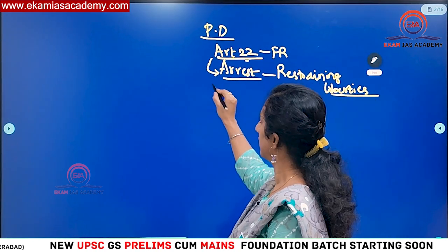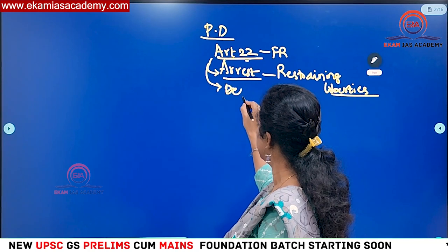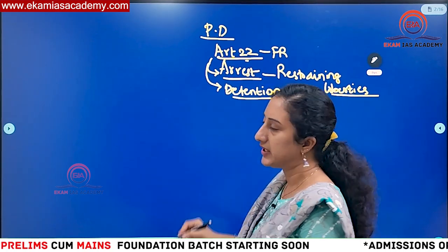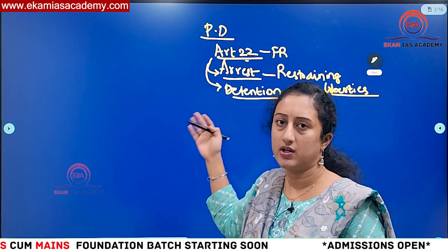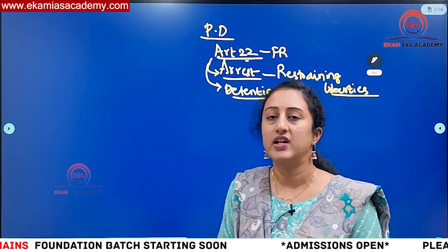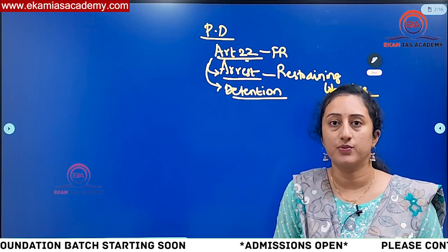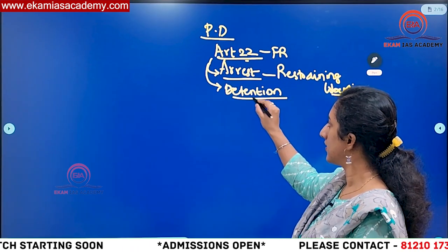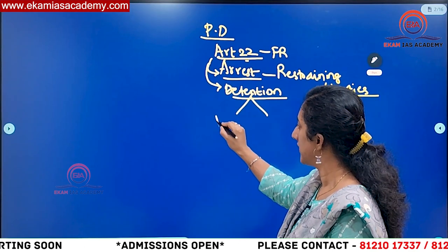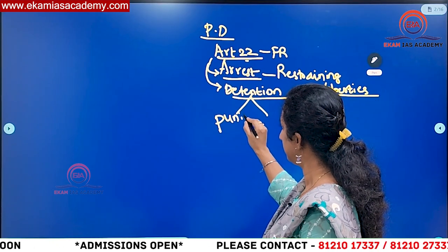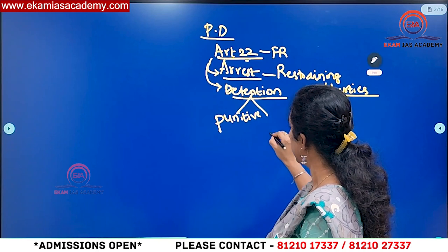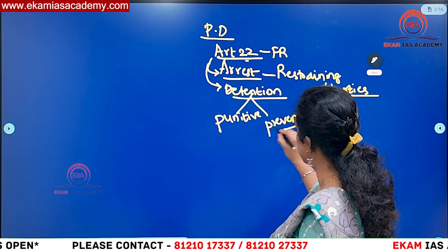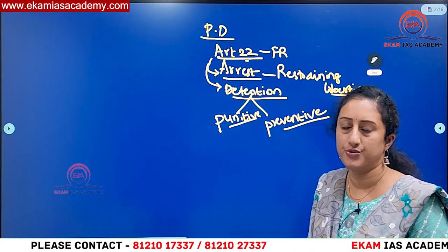Under Article 22, there is protection from both arrest and detention. In case of illegal detention, you can file a habeas corpus writ under Article 32. Detention under Article 22 is covered in two ways: one is punitive detention, and the other is preventive detention.